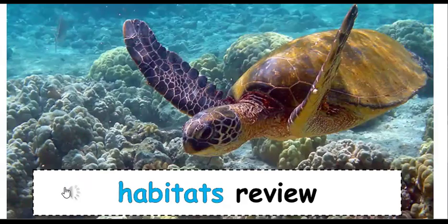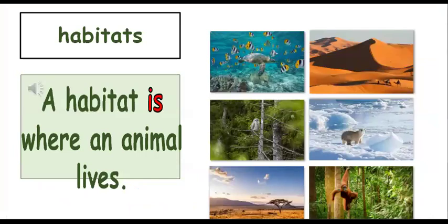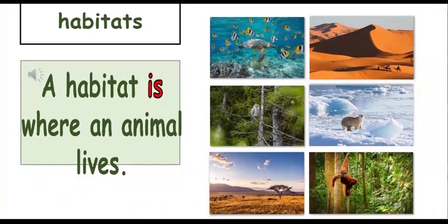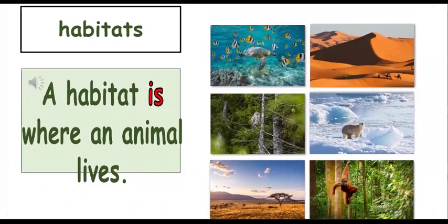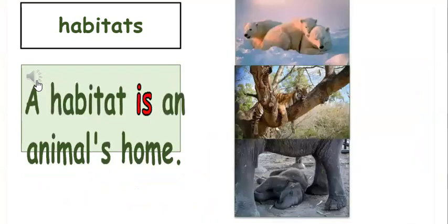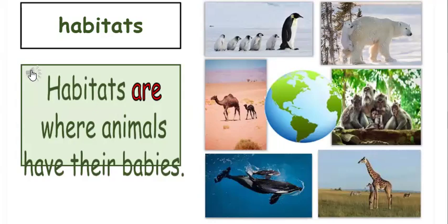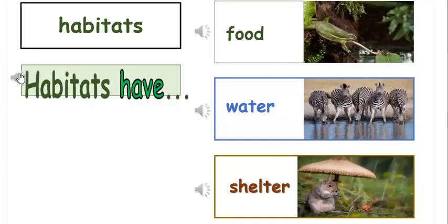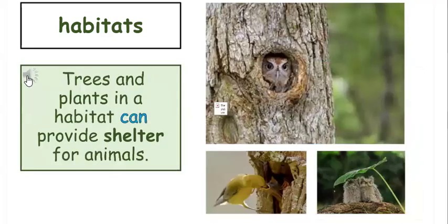Habitats Review. A habitat is where an animal lives. A habitat is an animal's home. Habitats are where animals have their babies. Habitats have food, water, and shelter. Trees and plants in a habitat can provide shelter for animals.